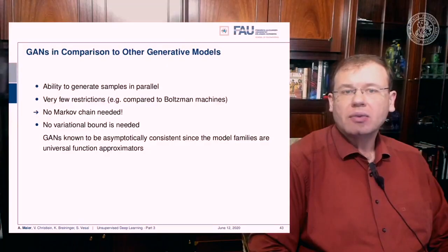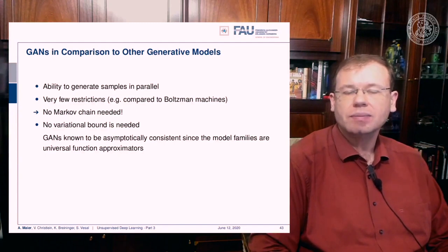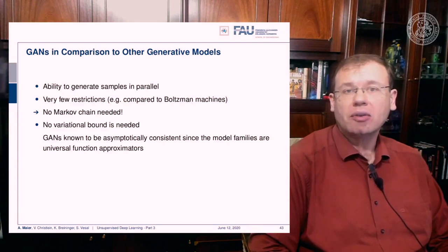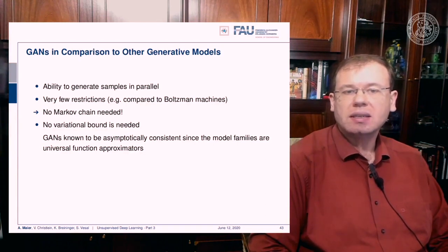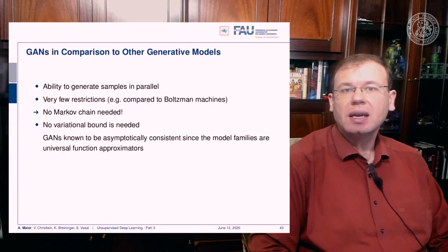A big advantage of GANs is that they are able to generate samples in parallel with very few restrictions, for example compared to Boltzmann machines which have plenty of restrictions. There is no Markov chain needed in this model, and no variational bounds are required. GANs are known to be asymptotically consistent since the model families are universal function approximators.